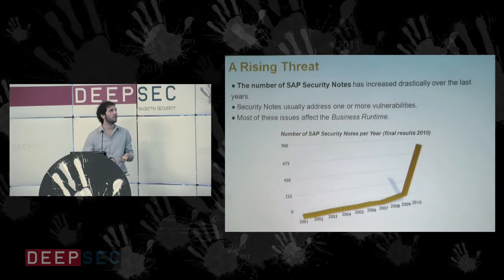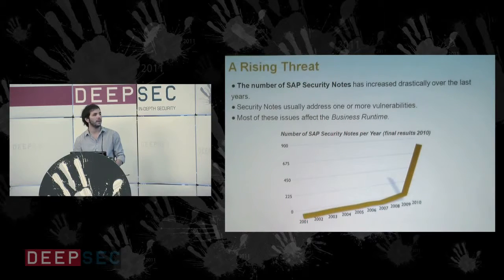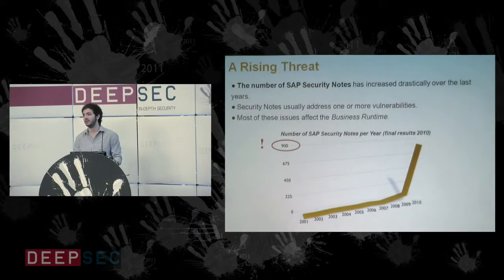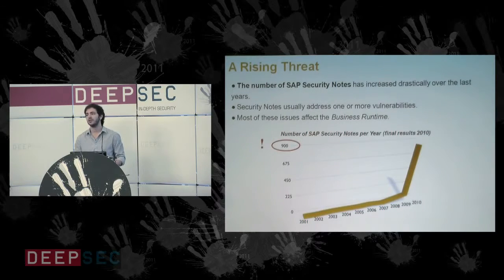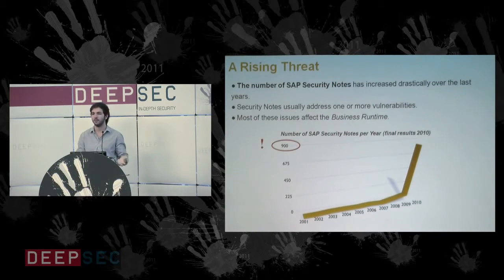The threat is rising. We made a chart of the number of SAP security notes released each year. In 2005, there were fewer than 20 security notes per year. By 2010, there were almost 900 SAP security notes — SAP released over 500 in December alone, so administrators didn't have a very happy Christmas. This year we're already at around 700 notes, but we won't know the final count until December. The larger the number of security notes, the larger the number of known vulnerabilities, and the easier it becomes for an attacker to reverse-engineer patches and exploit vulnerabilities.